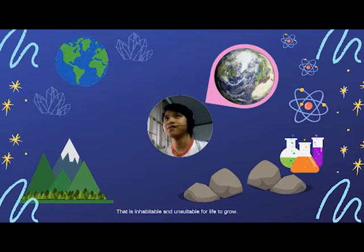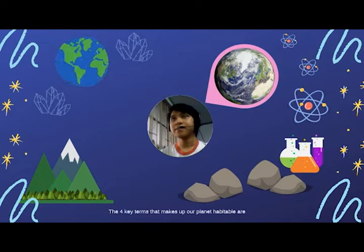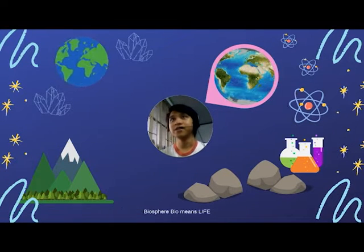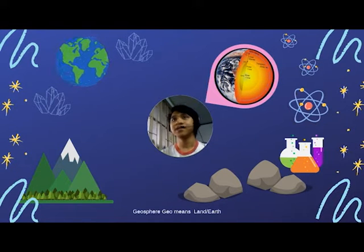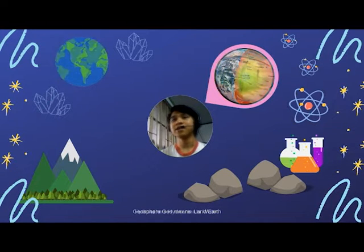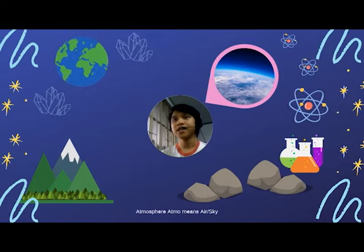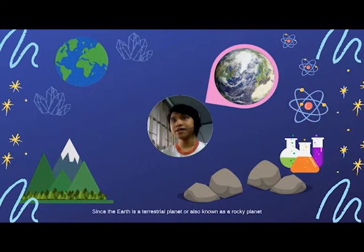If not for those things, the Earth may not have been any different from countless barren planets that are inhabitable and unsuitable for life to grow. The four key terms that make up our planet's habitability are: biosphere — bio means life; geosphere — geo means land or earth; hydrosphere — hydro means water; and atmosphere — meaning air or sky.